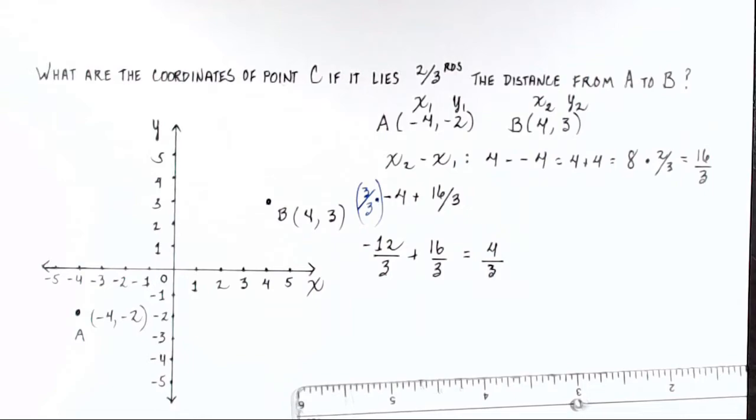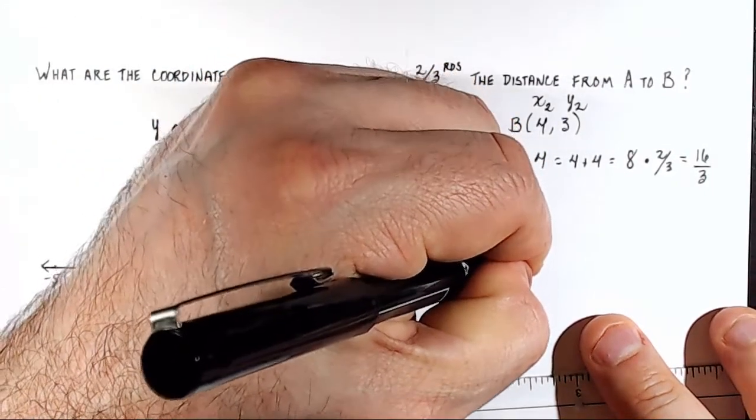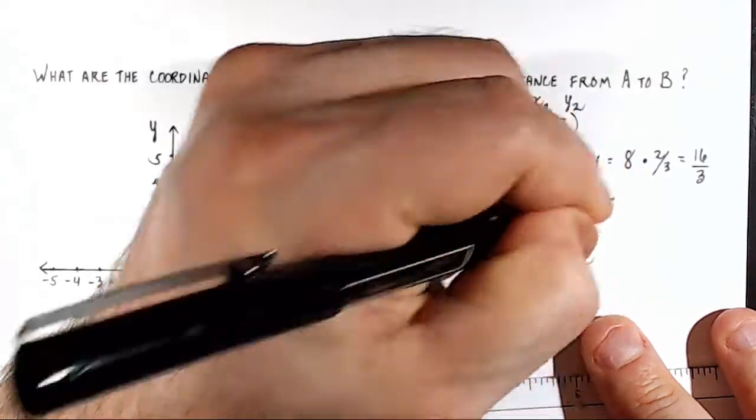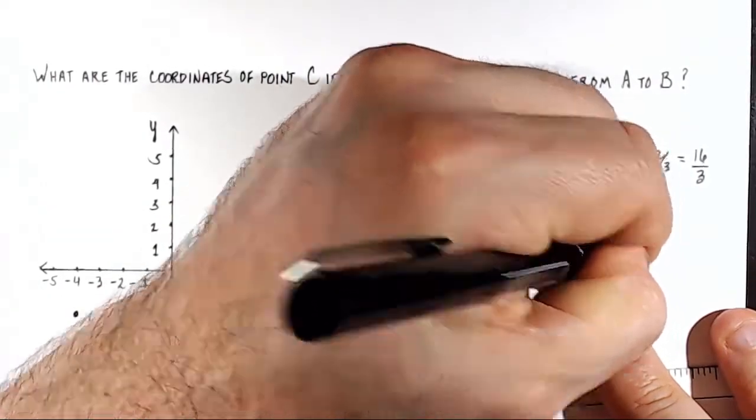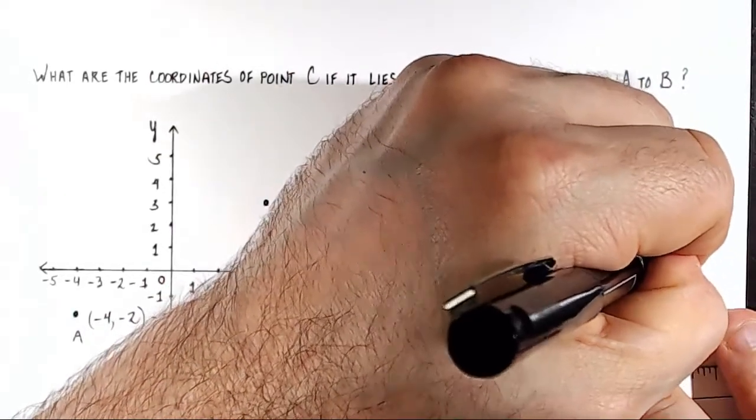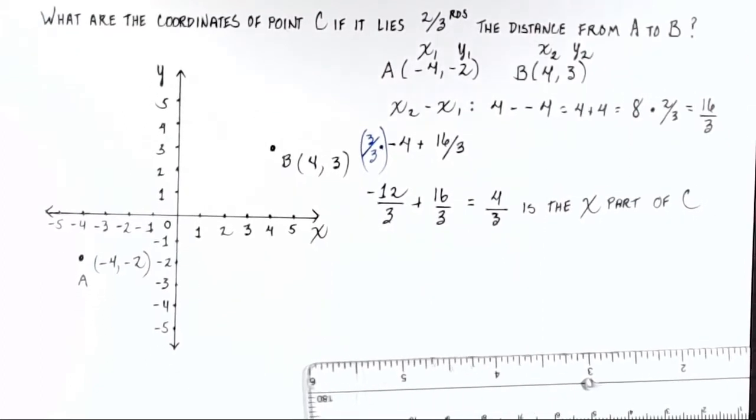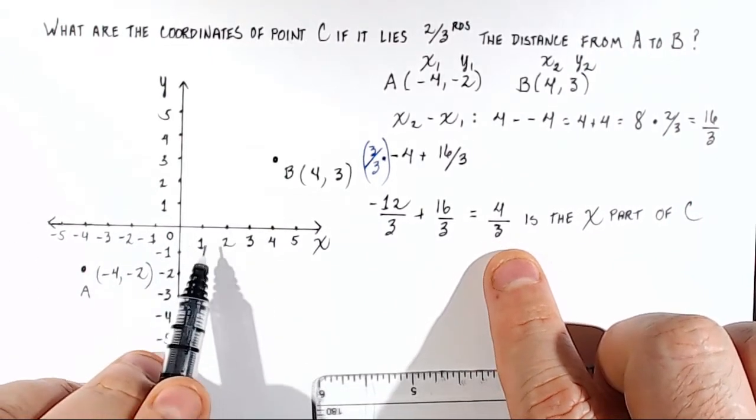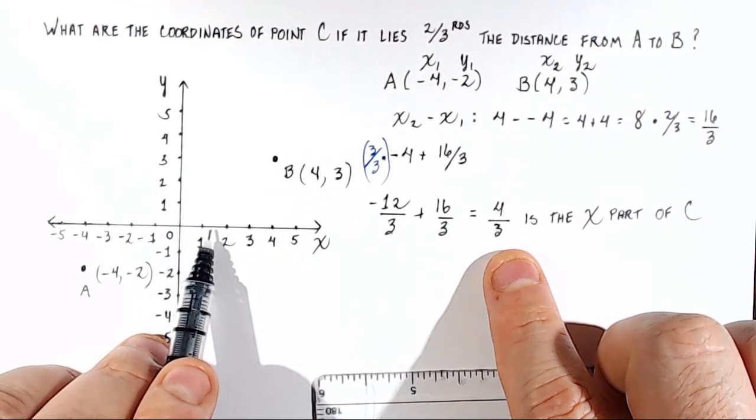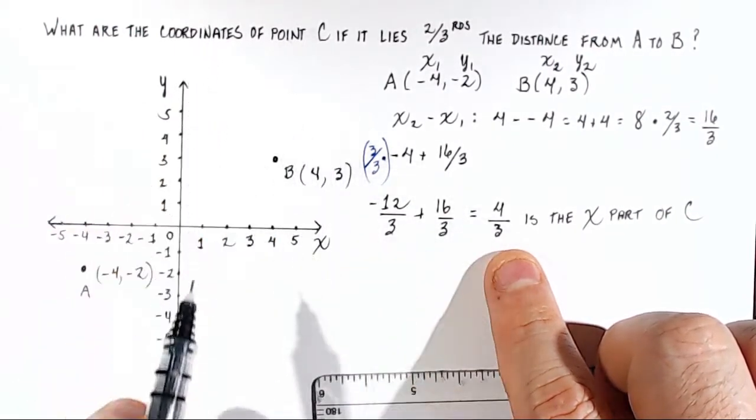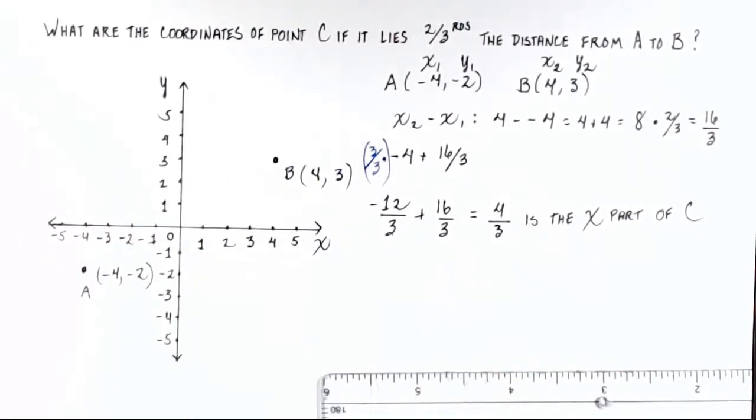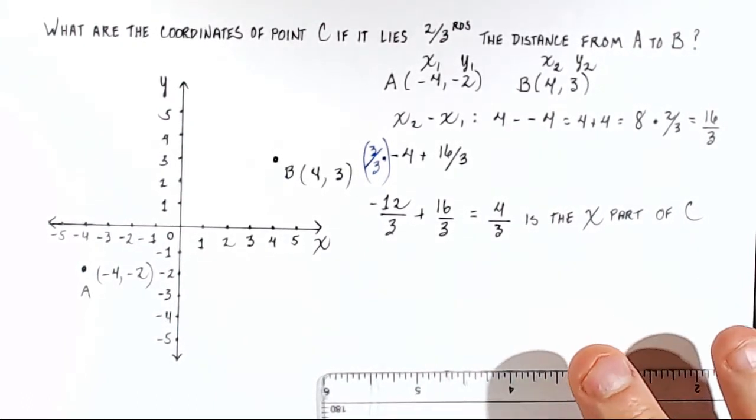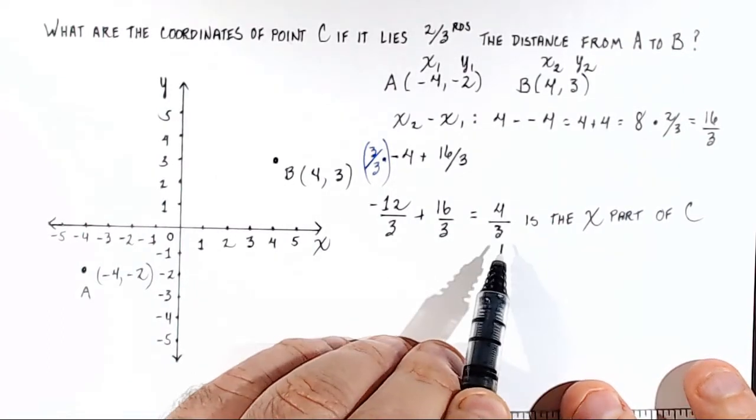Now what is that right there? That's important. This right here is the x part of the C coordinate. So we have found half of our answer. So we're going to be at 4 thirds. That's 1 and 1 third. So I know that somewhere about right here, somewhere along this vertical line I'm making, imaginary line I'm making with the pen, is going to be our point. Now let's find the y component of this coordinate pair.